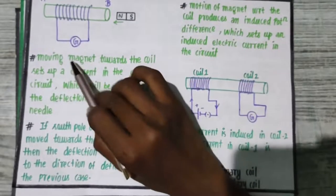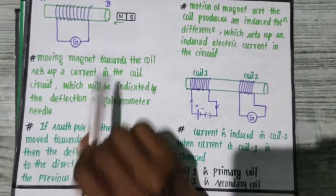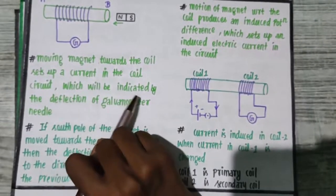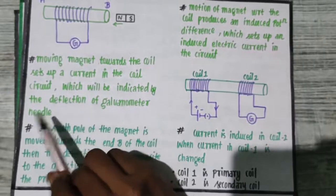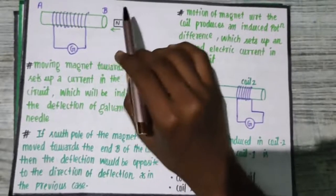Moving magnet towards the coil sets up a current in the coil which will be indicated by the deflection of galvanometer needle. The galvanometer needle will be deflected. It is very sensitive.